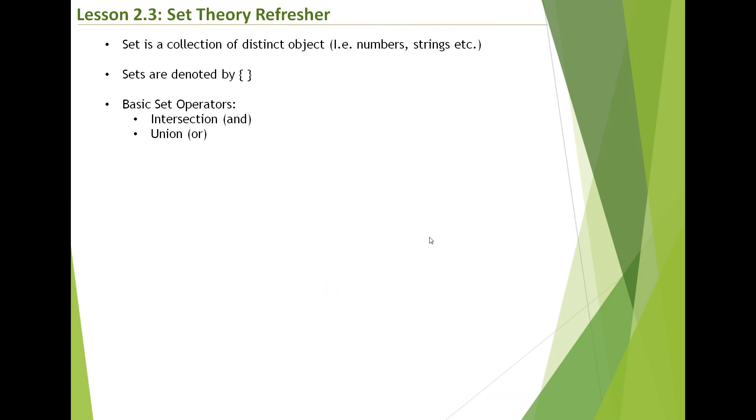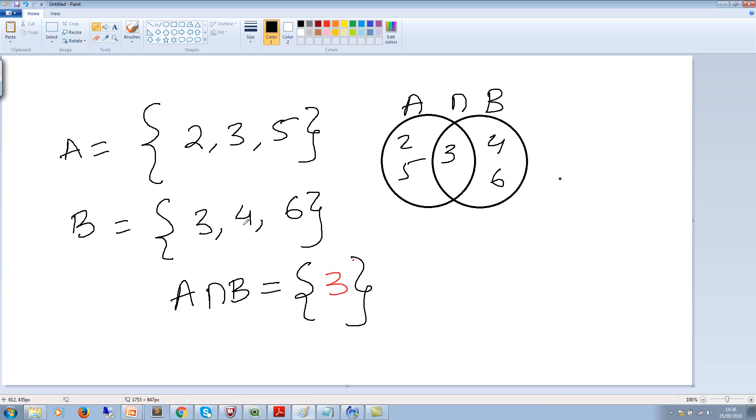Then we look at union. Union is also treated as a logical operator as OR. So it is basically everything, that's your full set. So going back to our example, A union B equals to set of 2, 3, 4, 5, and 6.